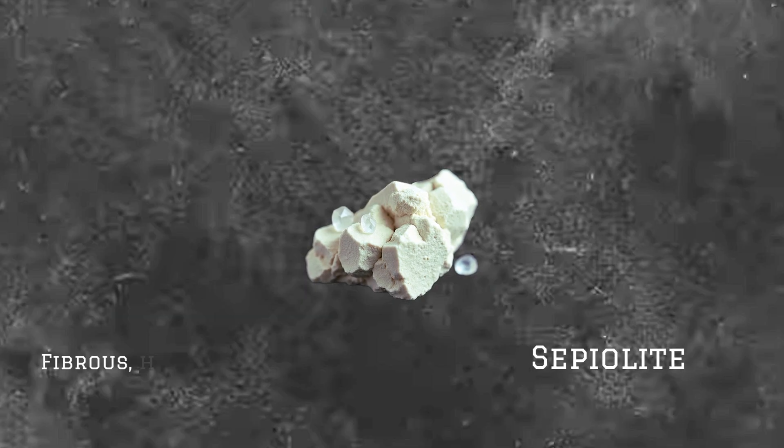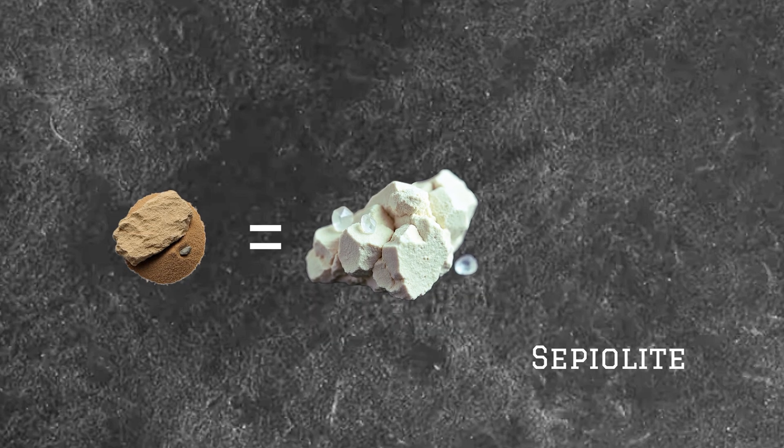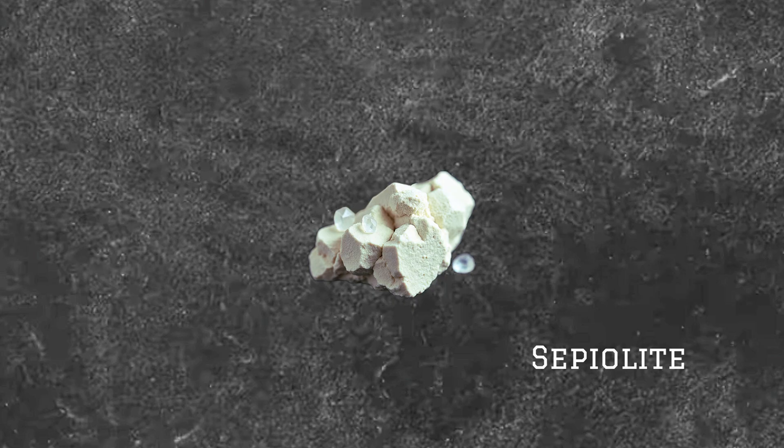Sepiolite. Sepiolite is a fibrous hydrous magnesium silicate mineral that shares a similar morphology with attapulgite, characterized by its elongated, fibrous structure.